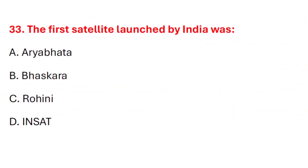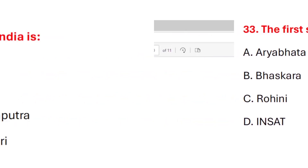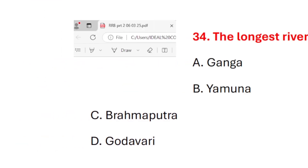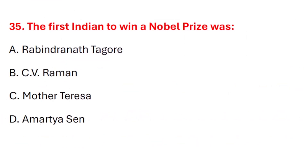Question 33. The first satellite launched by India was? Correct answer is option A: Aryabhata. Question 34. The longest river in India is? Correct answer is option A: Ganga. Question 35. The first Indian to win a Nobel Prize was? Correct answer is option A: Rabindranath Tagore.